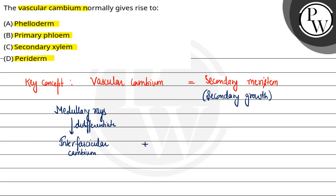Aur dusri taraf present hota hai intra-fascicular cambium, jo ki primary cambium hai. Ab ye dono combine karke bana deti hain ek complete cambium ring, jise hum kahenge vascular cambium ring.